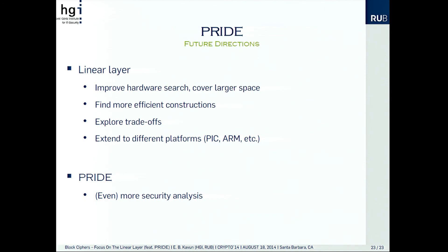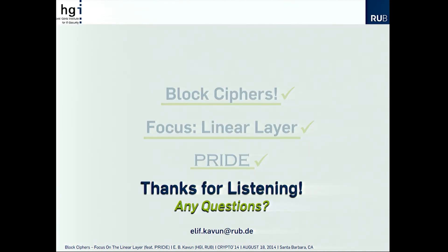Some future directions for linear layers specifically: we would like to improve the hardware search to cover a larger space — maybe the full space — and possibly find a linear layer even more efficient than 36 instructions. We want to explore more trade-offs and extend to different platforms; this work is AVR-specific, but we also had some results for 16-bit microprocessors that are not bad. We could try to design specifically for other platforms. For PRIDE, we would like even more security analysis. Thanks for listening — any questions?